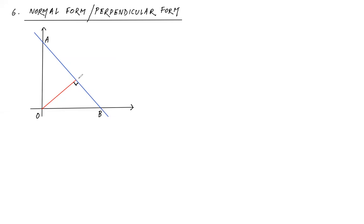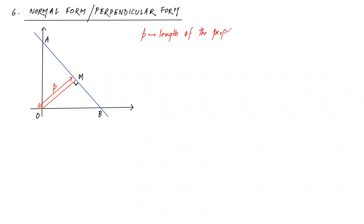Let our line be AB and OM perpendicular to AB, where O is the origin and M is the foot of the perpendicular on the line. The length OM is denoted as p units — small p. That is the length of the perpendicular from the origin to the straight line. So in any question, if you encounter the phrase 'length of the perpendicular on the straight line from the origin,' immediately mark it as format number six.